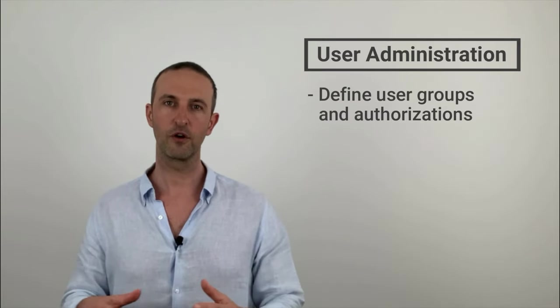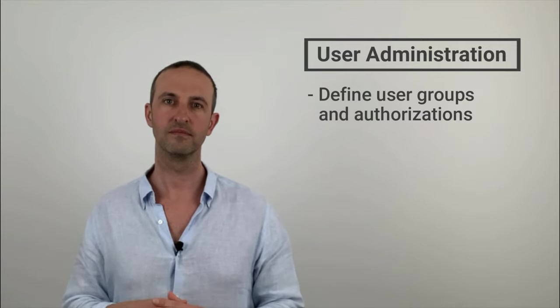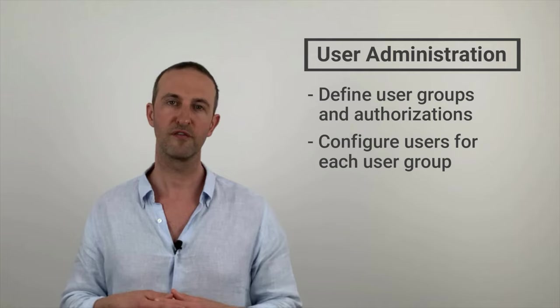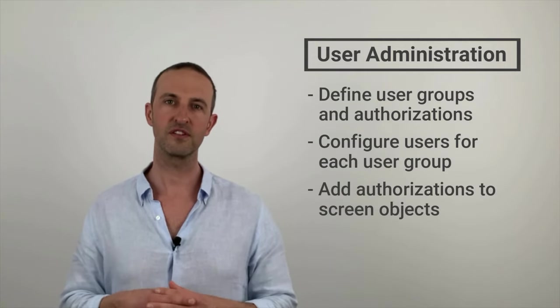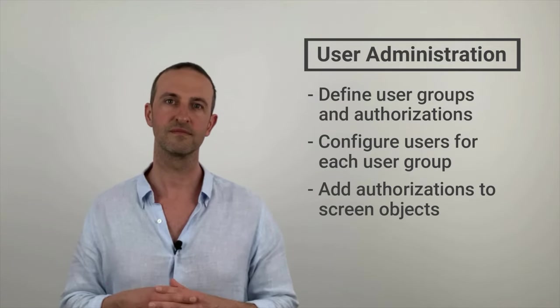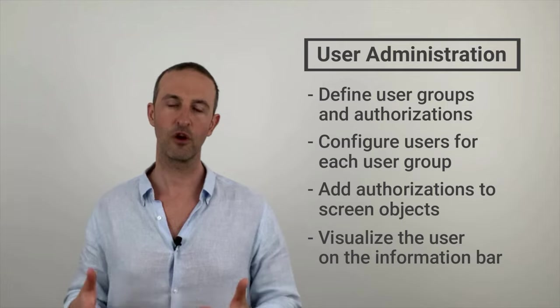First, we are going to define the user groups and authorizations or permissions for each group. Next, we will configure users for each user group. After that, we will add security authorizations to screen objects like push buttons or parameter fields. In our final step, we are going to visualize the current active user in the information bar of the template. A PDF overview of the users, user groups, and authorizations for our HMI application is attached to the resource section of this lecture — I highly recommend you print it out or keep it open while working through this section.